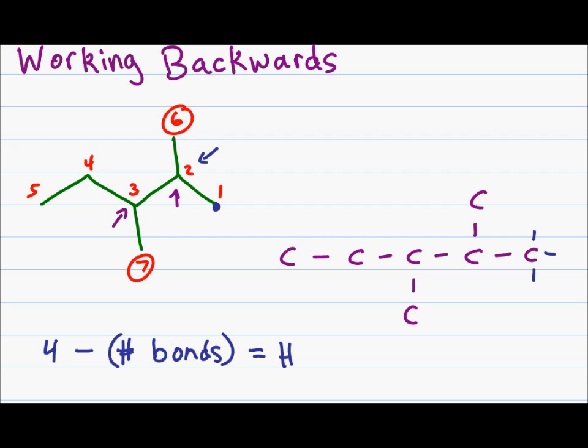Carbon number two has a bond to carbon six, one and three. Three bonds means I have one hydrogen left. Carbon number three has a bond to carbon two, four and seven. That means if I have three bonds, I have one hydrogen left. Carbon four is bound to carbon three and five. That means I have two hydrogens. And carbon five is only bound to carbon four. That means I have three additional hydrogens. Carbons six and seven are each bound once. That means each of them also has just three hydrogens.